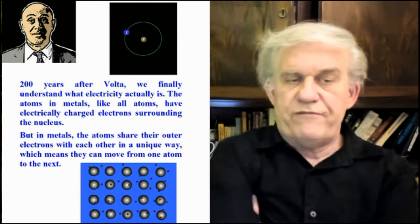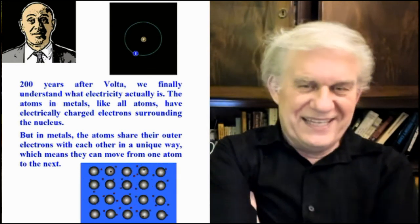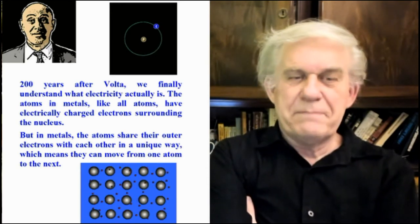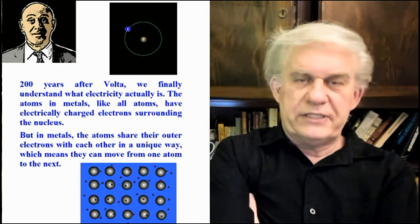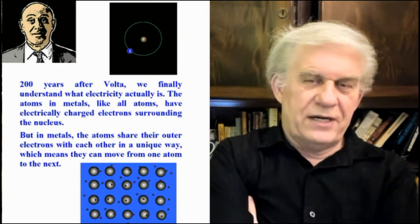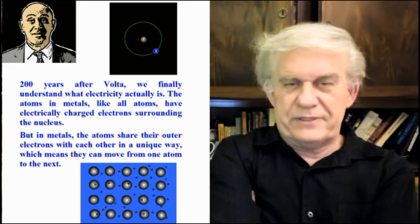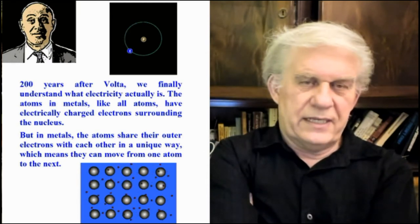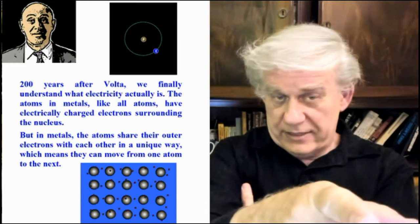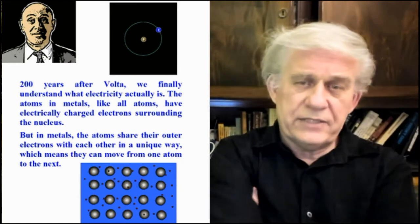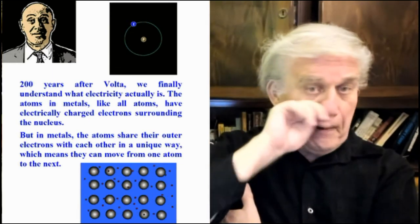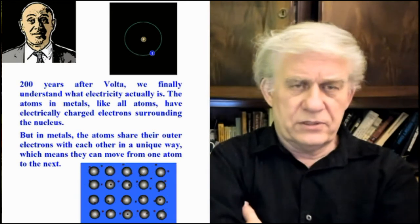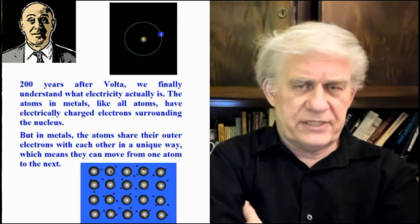Al-Khalili continues. He says, 200 years after Volta, we finally understand what electricity is. Do we? The mathematicians know what electricity is? The atoms in metals, like all atoms, have electrically charged electrons surrounding the nucleus. Oh, is that so? Maybe they can draw an atom for me. Is it an electron bead rolling around a proton ball, bowling ball? Is that what it is? Is that what an atom looks like? And the only question there, again, is how does the electron bead stay tied to the nucleus? Why doesn't it spontaneously run off and do ionization? Why does it stay physically bound to the nucleus?